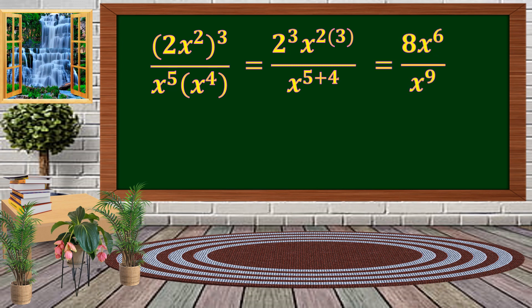Simplifying further: 2 times 2 times 2 is 8, and x raised to 2 times 3 is x raised to 6. The denominator x raised to 5 plus 4 becomes x raised to 9. We then observe similar variables in the expression and apply the Quotient of Powers.